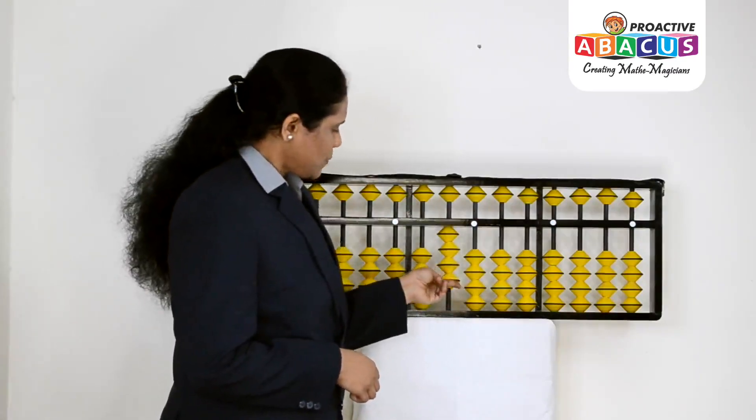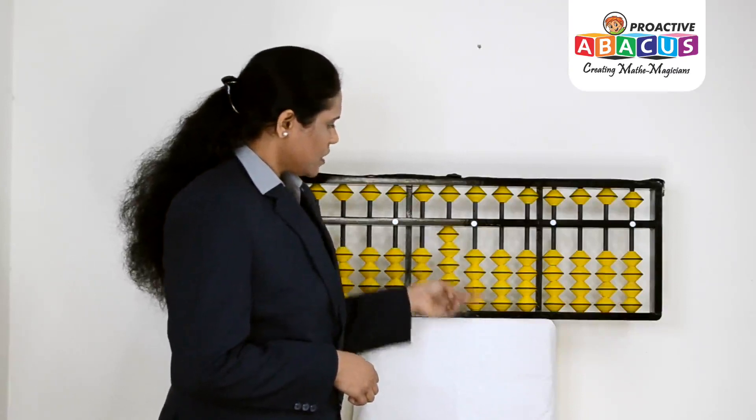Next, we have to show 43. Tens place is 40, unit place is 3, that's 43.